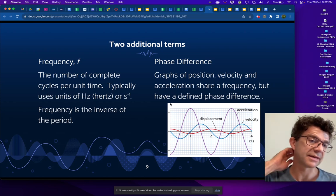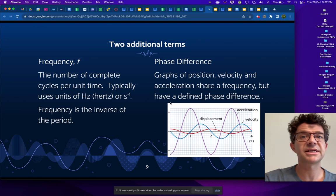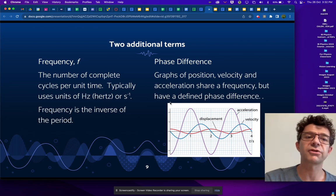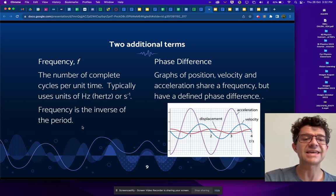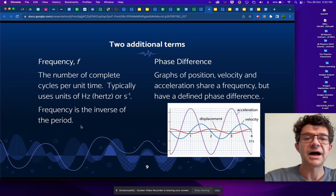Two additional terms that we sometimes look at, we have frequency. Frequency is often used in place of period to describe the motion. When the period gets longer, it means that the object is oscillating more slowly. On the other hand, when the frequency gets larger, it means that it's oscillating more quickly, typically given in the number of cycles per second or Hertz. It is the inverse of the period. So frequency is one over the period.